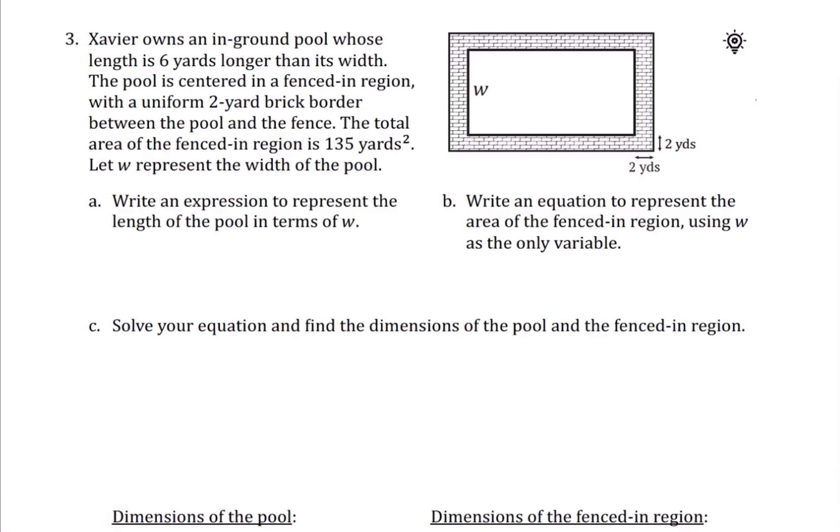What we know is we had the width of the pool as being W, and it just says let W represent the width of the pool. Now we also know that the length is six yards longer than the width. So I can put for the length W plus six. For part A where it says write an expression to represent the length, we simply need to write W plus six.